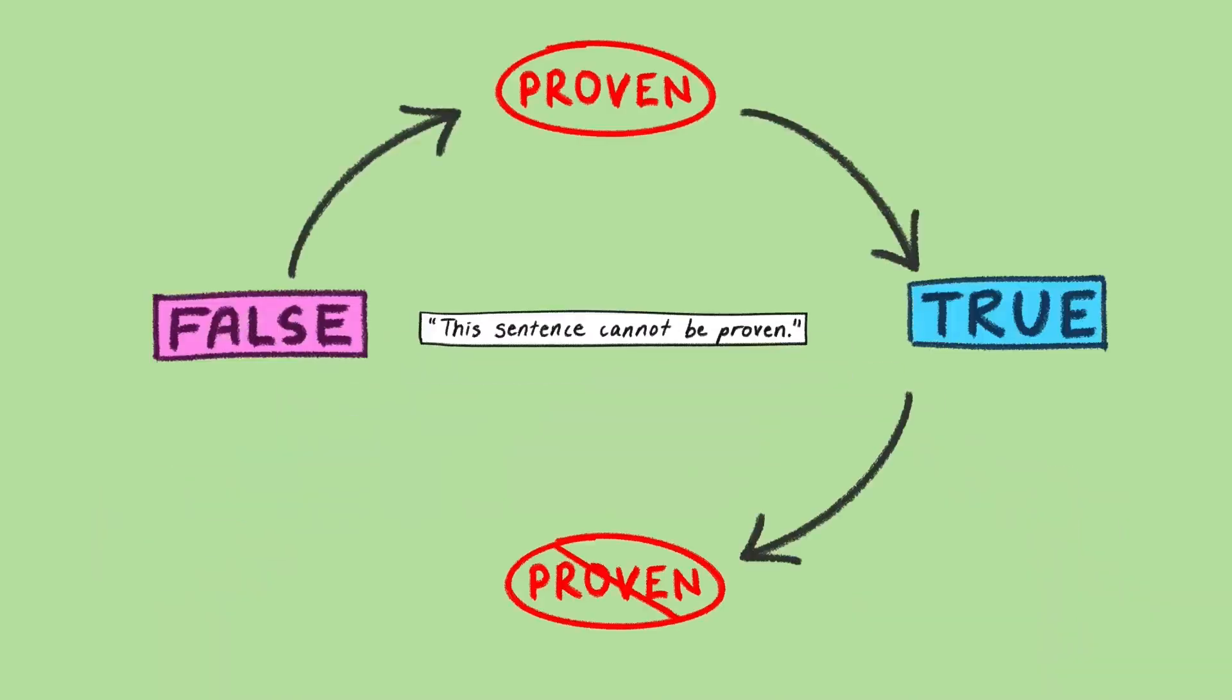Sound familiar? It's a paradox! But math should not contradict, so the loop must be cut. Gödel discovered a true statement that cannot be proven, demonstrating that math is incomplete.